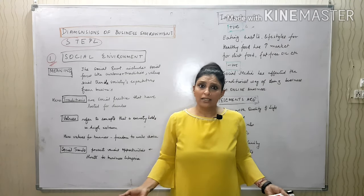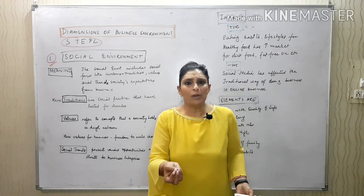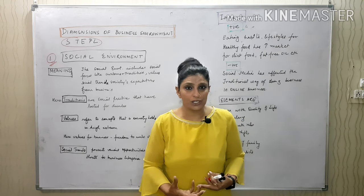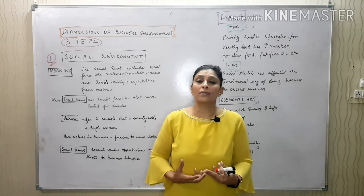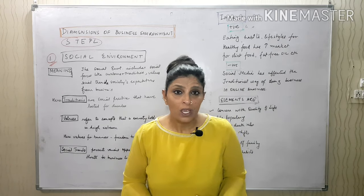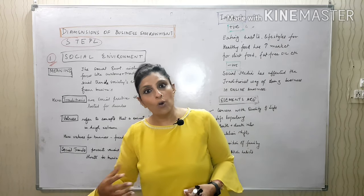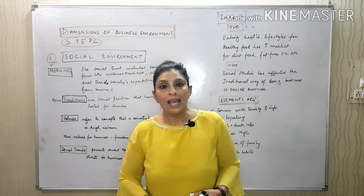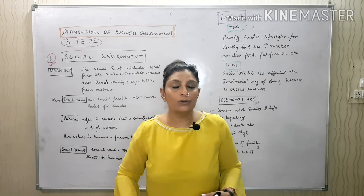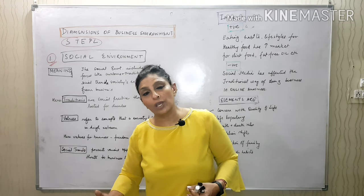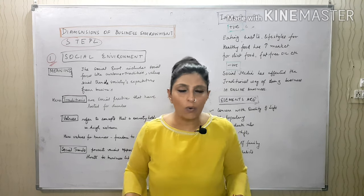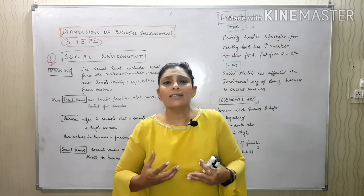Social trends: what are prevailing in the society? For example, people are becoming very health conscious — they want better life expectancy. So what have they started switching over to? More health-oriented foods. They are going for diet food, fat-free cooking oil, they're going to gyms and having mineral water.